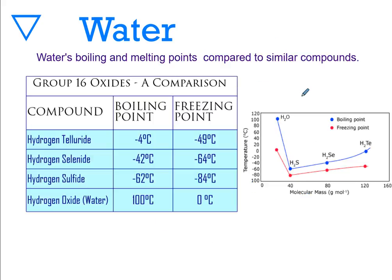So this is a comparison of water to other similar compounds from group 16. The boiling point and melting points compared to other compounds are pretty astounding. You know that oxygen is in group 16, so is sulfur, selenium, and tellurium.